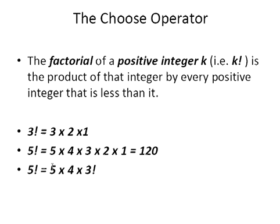5 factorial can also be written as 5 times 4 times 3 factorial. Looking back, 3 factorial is the same as 3 factorial in the previous expression, so we can actually write a factorial in terms of another factorial.